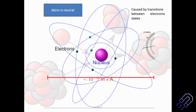We have already studied X-rays and how they are generated: electrons are knocked out from one of the energy levels, there is a difference in energy, and that is given out in the form of X-rays. A similar thing also happens within the nucleus. But if we are exciting a neutron or a proton, the amount of energy that we need is on a completely different scale altogether.